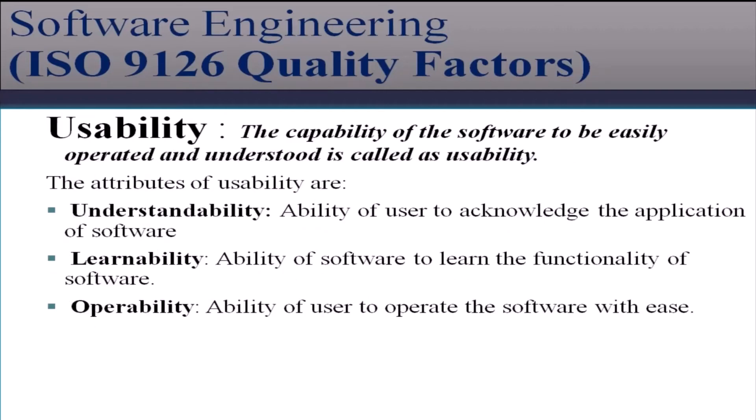The next factor is usability. The capability of the software to be easily operated and understood is called usability. Usability includes understandability, learnability, and operability. Understandability means ability of the user to acknowledge the application of the software. Learnability means ability of the user to learn the functionality of the software. Operability means ability of the user to operate the software with ease.